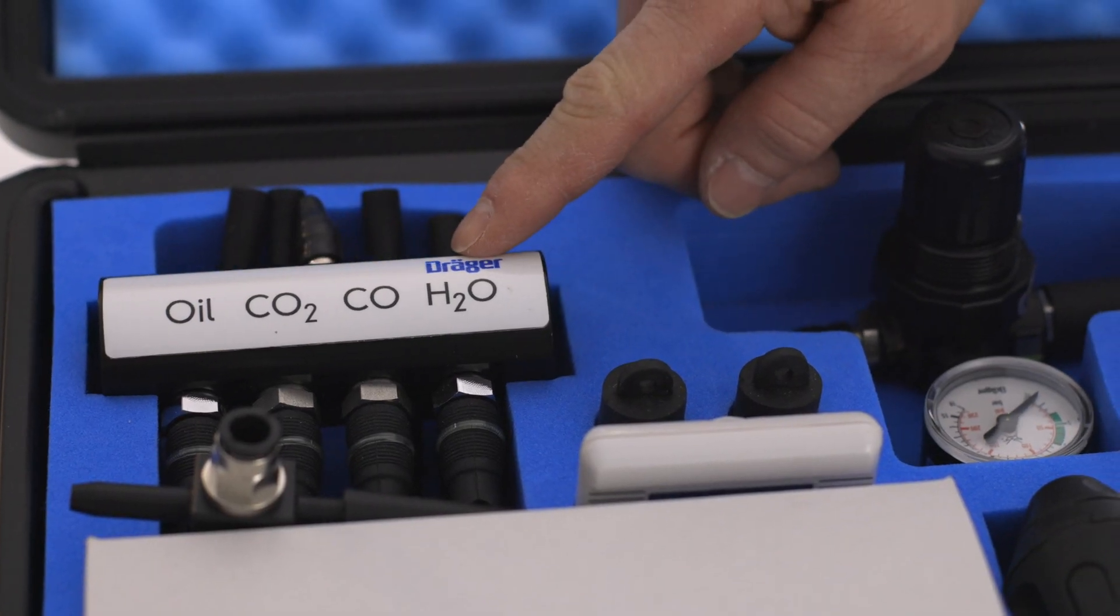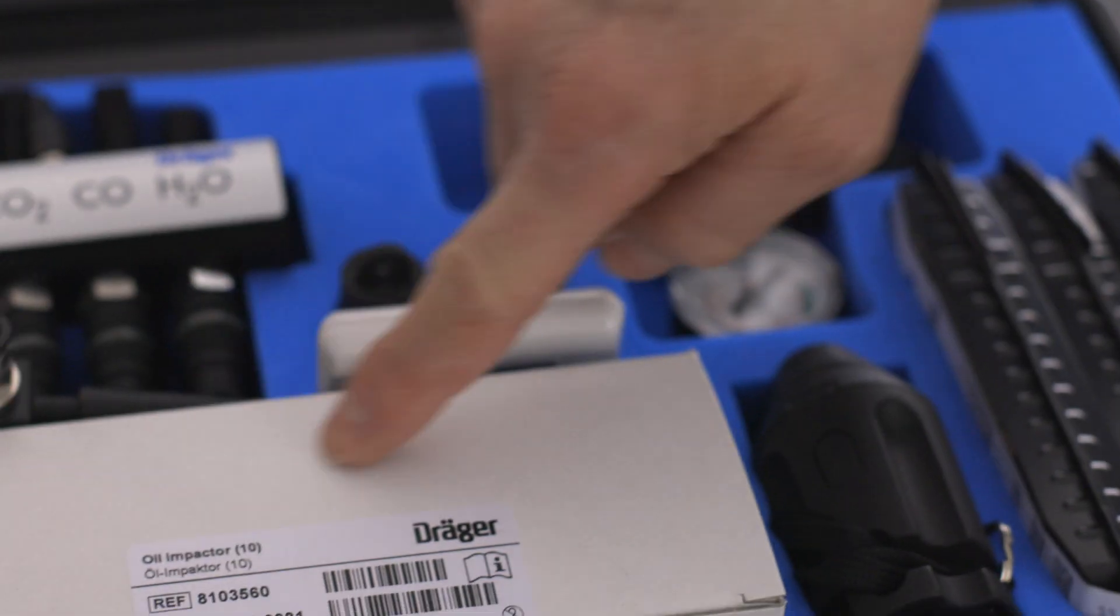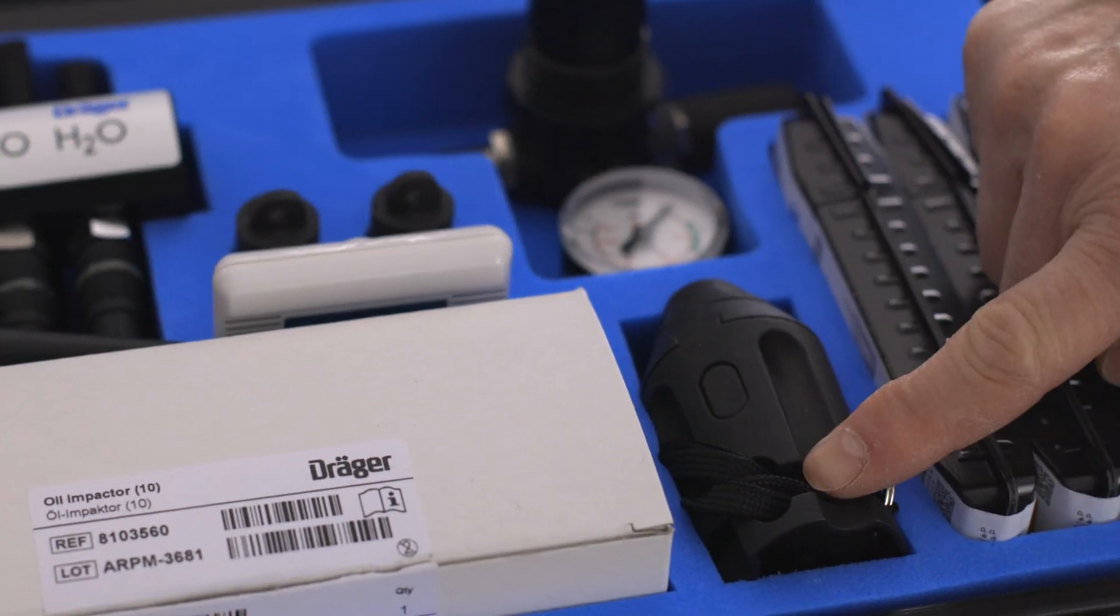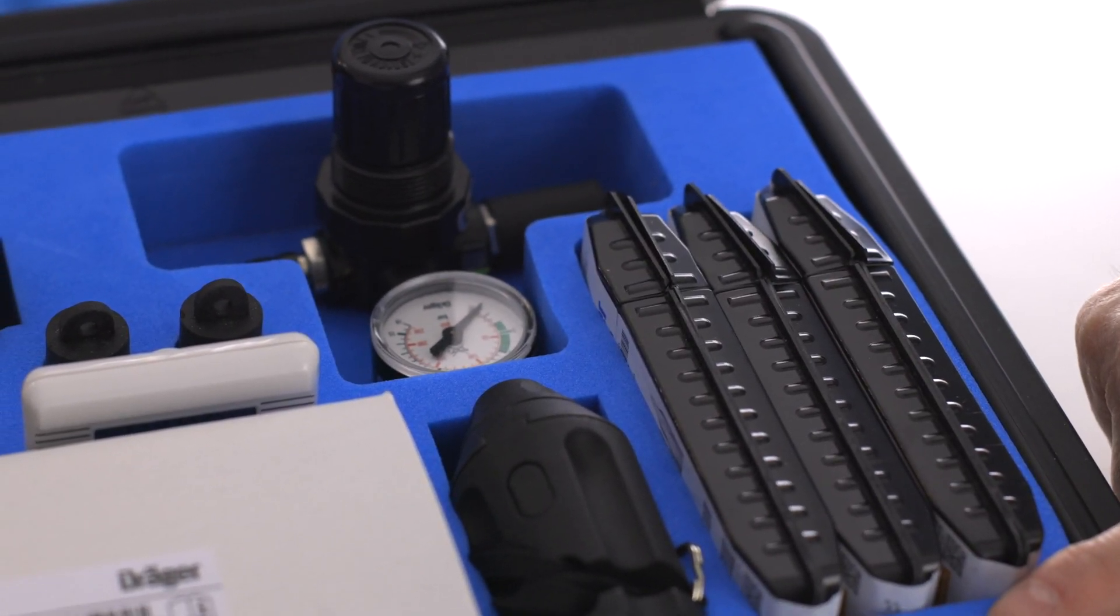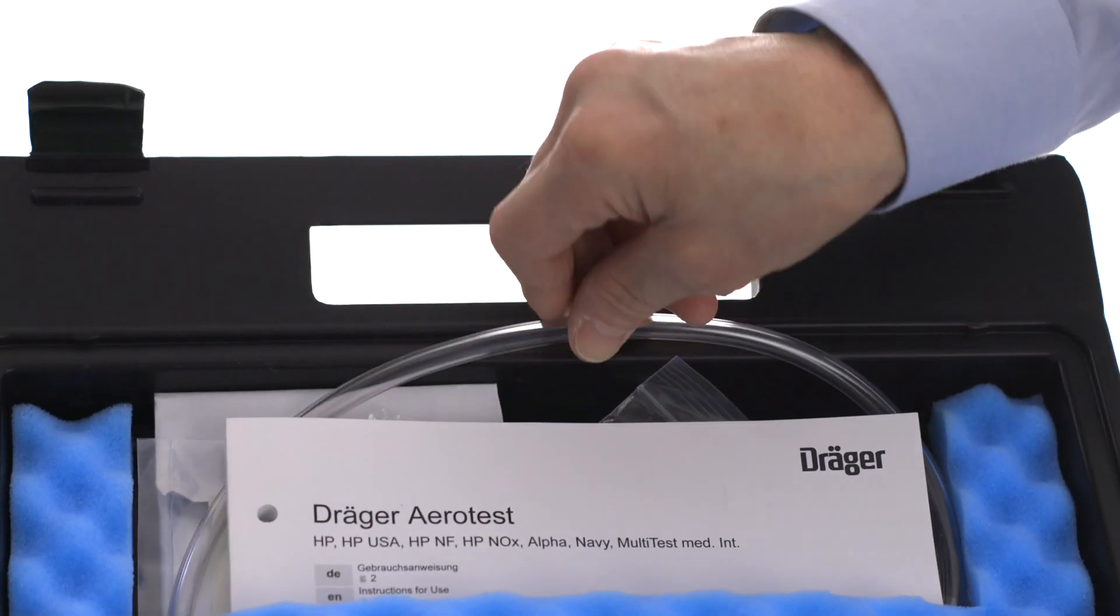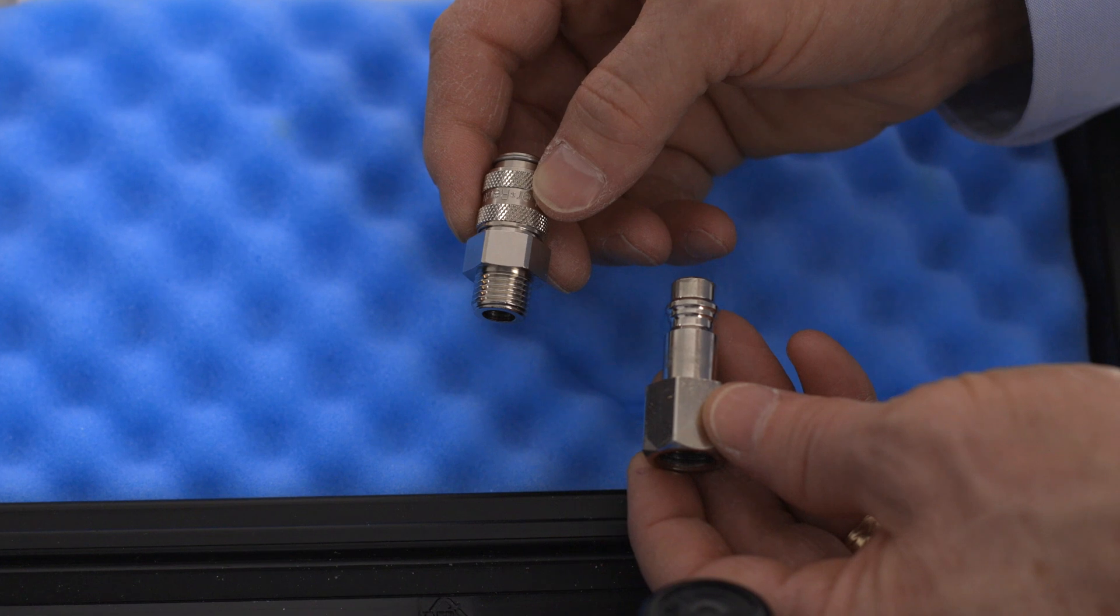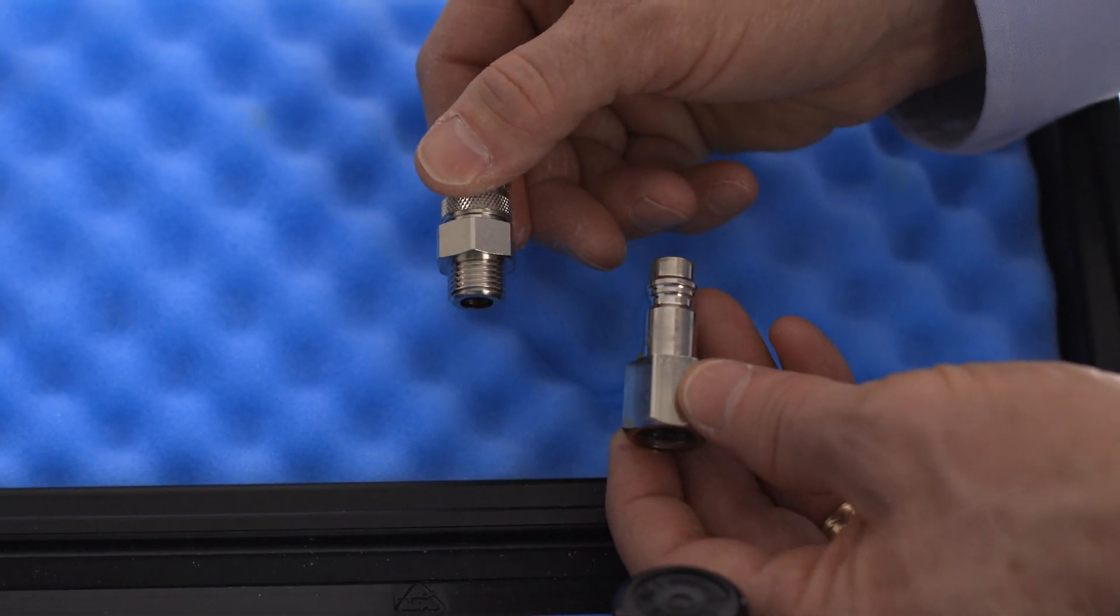When you open the kit, you'll see the measuring device with the tube holders, a low-pressure reducer, timer, a package of oil impactors, the adapter for the impactor, tube opener, the tubes for carbon dioxide, carbon monoxide, and water vapor, a bubble test hose, and the instruction manual for the kit. The kit also includes a Parker Rectus Series 21 coupler and a Series 96 plug.